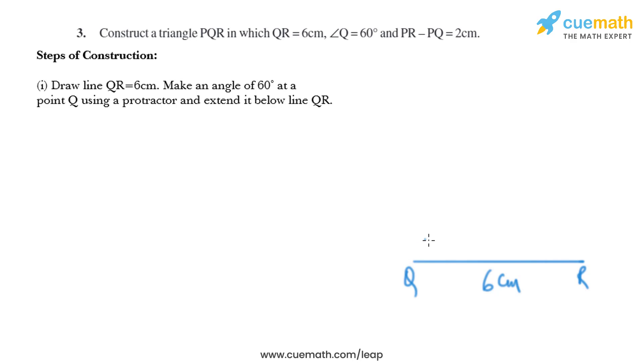Now I'll put the protractor at point Q and draw a line that measures 60 degrees. So like this, we'll draw a line and that angle is 60 degrees. Now we will extend this line below QR like this.